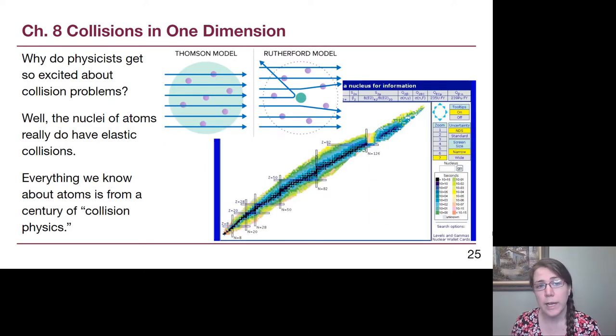So why do physicists care so much about elastic collisions? Well, the key thing that we're going to talk about when we discuss what that term really means is that at the atomic level, pretty much every collision that's happening at small scales acts as an elastic collision. And so, everything that we know about atoms is from a century of smashing things together. And at that level, we keep all the kinetic energy before the collision and after, which is not true in most of the collisions that we've seen so far.